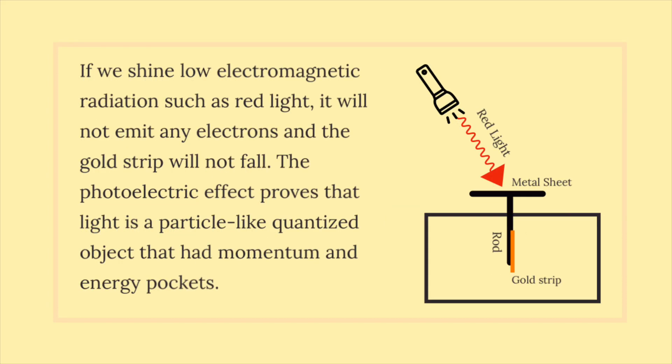If we shine low electromagnetic radiation such as red light, it will not emit any electrons and the gold strip will not fall. The photoelectric effect proves that light is a particle-like quantized object that has momentum and energy packets.